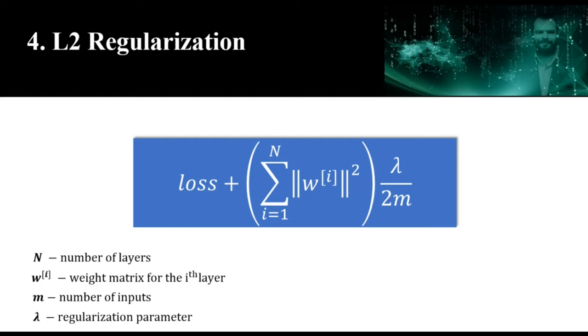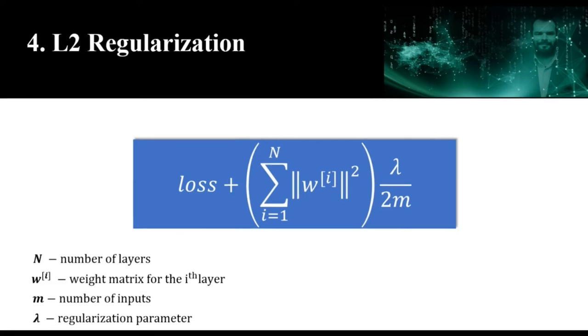There are a number of regularization methods but the most common techniques are called L1 and L2 regularization. The L1 penalty minimizes the absolute value of the weights whereas the L2 penalty minimizes the squared value of the weights. This is mathematically shown in this equation. Here the term we are adding to the loss is the sum of the squared norms of the weight matrices which is multiplied by a small constant lambda. It is called the regularization parameter. The other terms for this equation are N which is number of layers, W is a weight matrix for the each layer and m is a number of inputs.